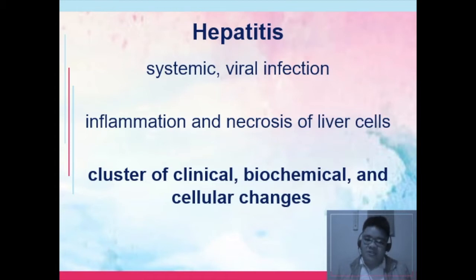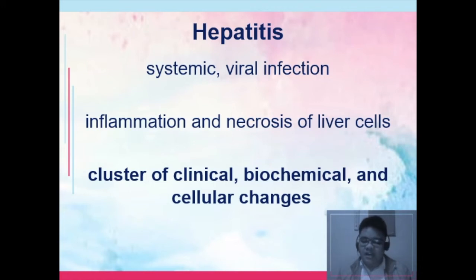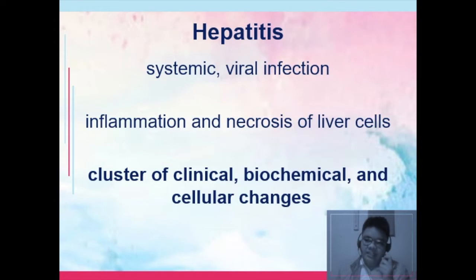There are a lot of types of hepatitis: A, B, C, D, E, and other references would talk about hepatitis G. They usually vary on the route of spread. Hepatitis A and E are considered to be spread by the fecal-oral route, meaning they usually spread by contaminated food. On the other hand, hepatitis B, C, and D are spread by blood. Hepatitis G is also spread by blood and is referred to as post-transfusion hepatitis. They refer to a cluster of clinical, biochemical, and cellular changes that occur in our body related to the inflammation of our liver.